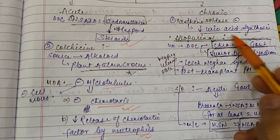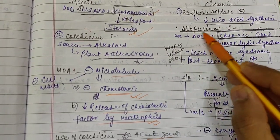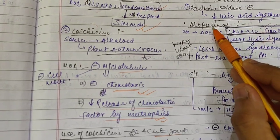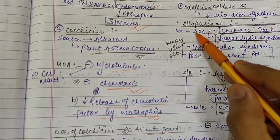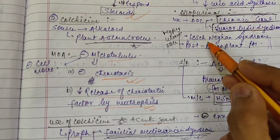allopurinol. It will decrease uric acid synthesis. Allopurinol is used as drug of choice for chronic gout and tumor lysis syndrome. Allopurinol is a xanthine oxidase inhibitor used as drug of choice in case of chronic gout and tumor lysis syndrome. It can also be given in